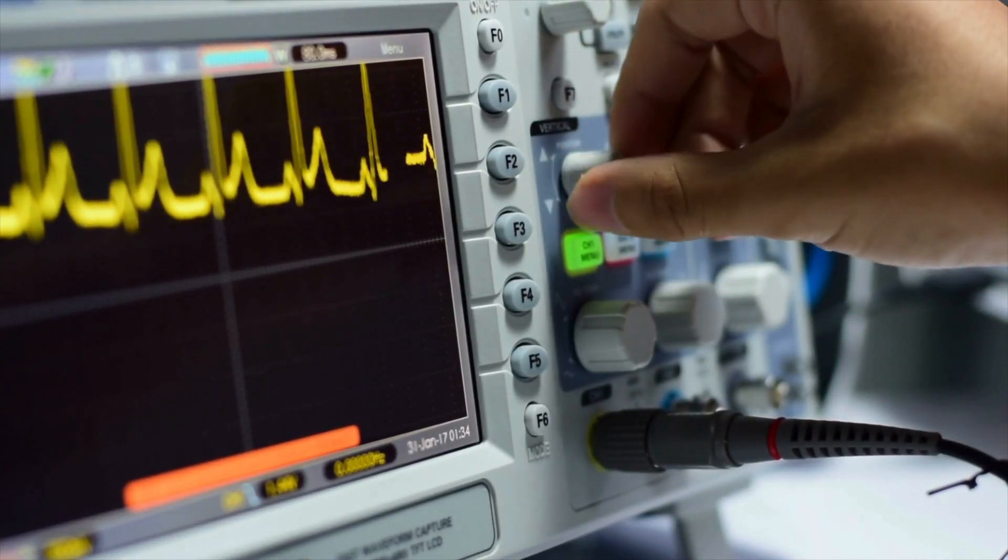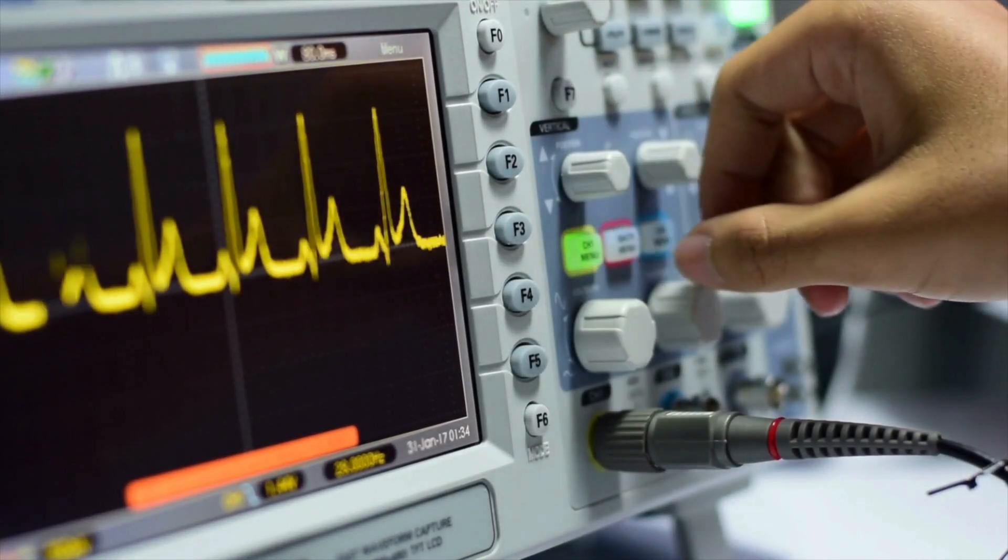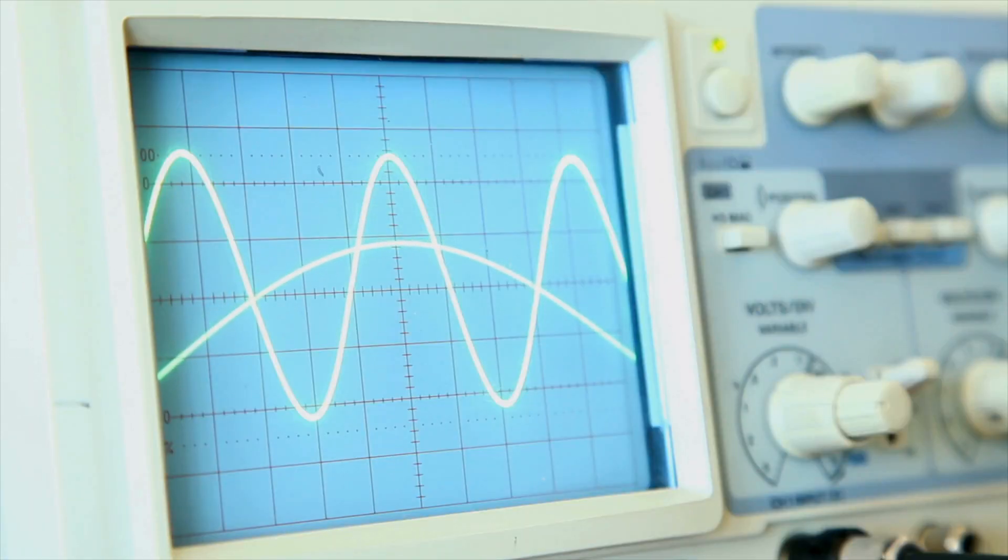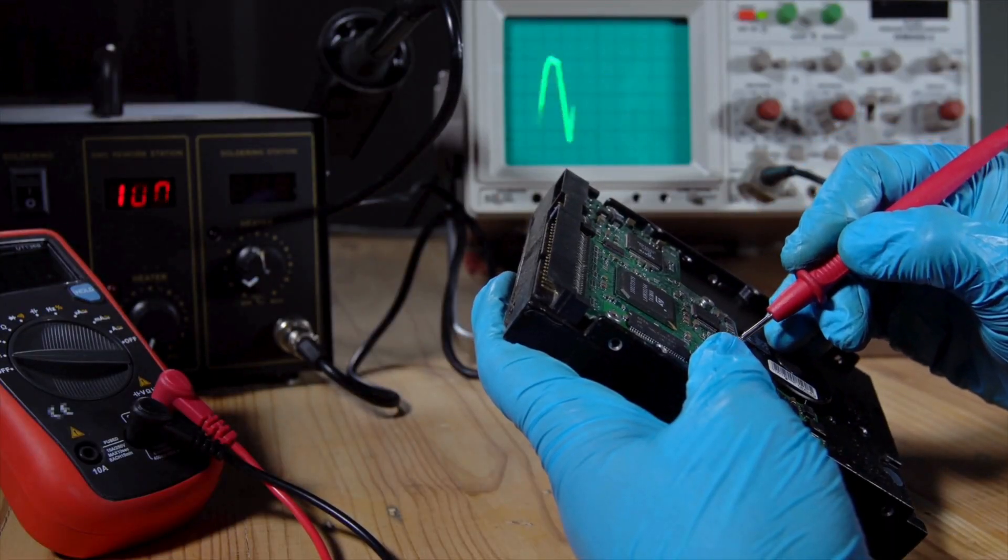So what is an oscilloscope? An oscilloscope is an electronic testing device that graphically displays varying signal voltages, usually as a two-dimensional plot of one or more signals as a function of time. The display shows voltage on the y-axis and time on the x-axis.